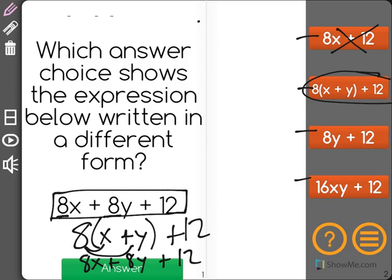So this is a possibility. 8y plus 12 would be like we are just removing the 8x, which, as we did earlier, you can't do. And 16xy, well, multiplying x and y together never happen in the first part, so it can't happen here. Leaving us with the correct answer, 8 times x plus y in parentheses plus 12.